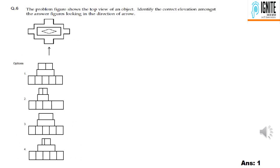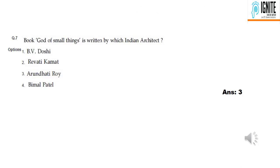Next is Question 6: we have a top view of the 3D figure and we need to identify the front view. The correct elevation — elevation means front view — is option 1. Question 7: 'God of Small Things is written by which Indian architect?' The answer is option 3.